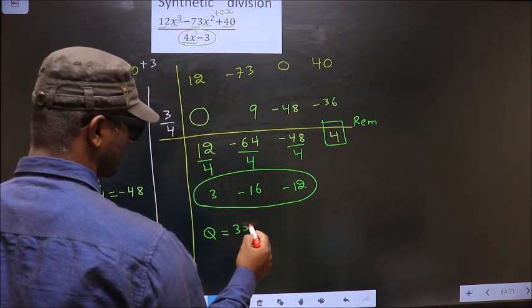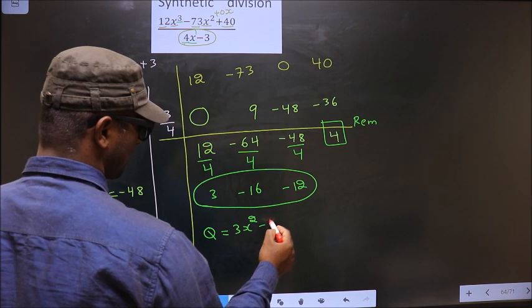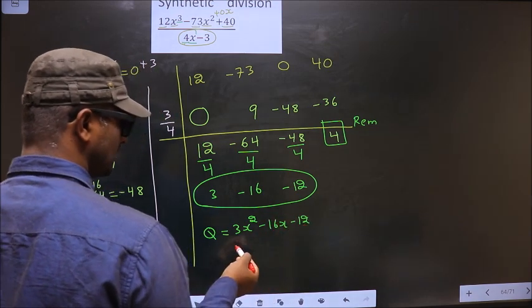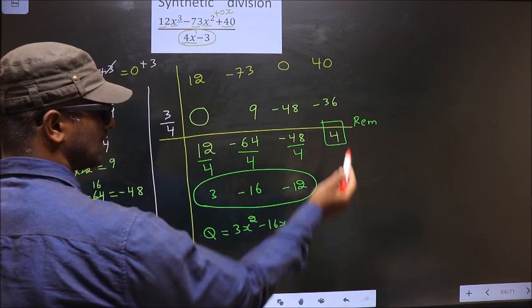And coefficients of that quadratic are these numbers. That is 3x square minus 16x minus 12. So this is our quotient and this is our remainder.